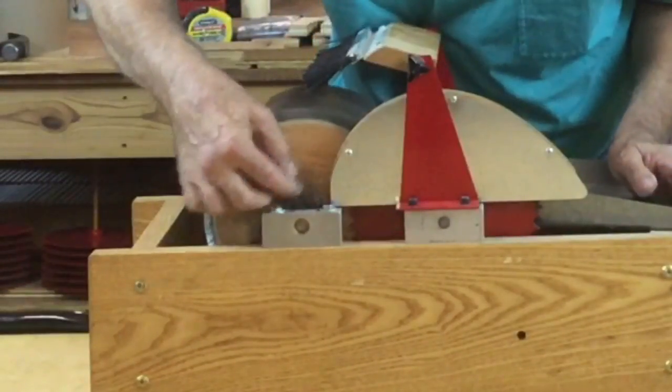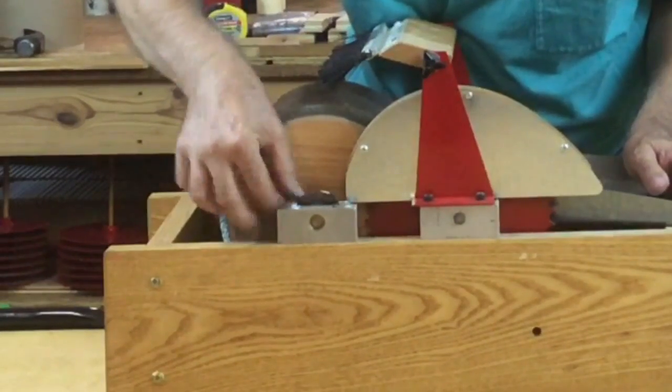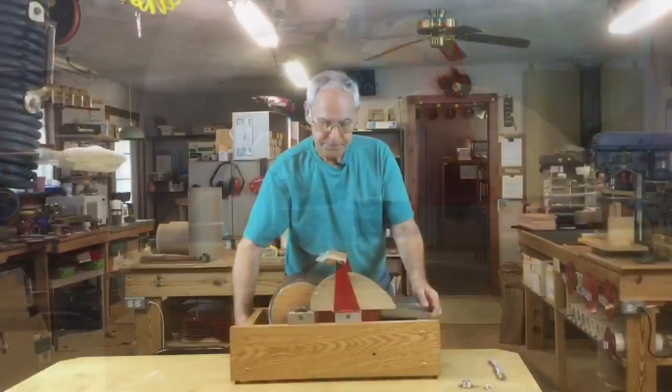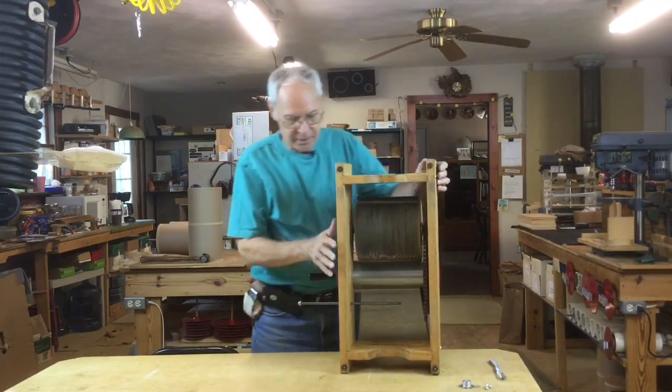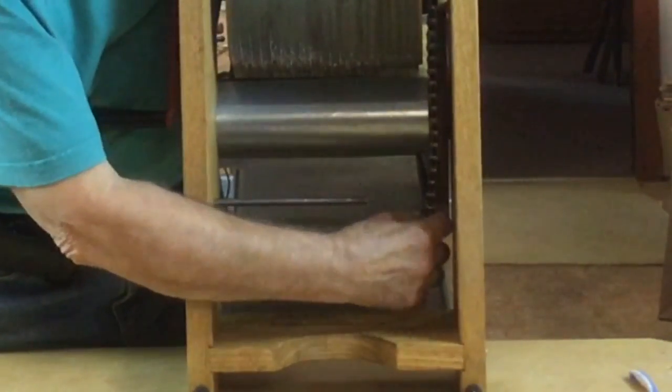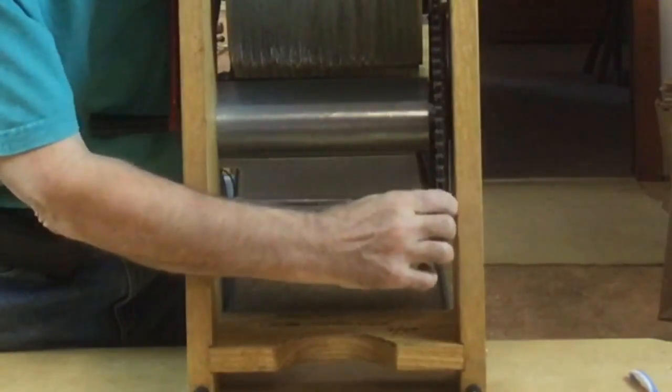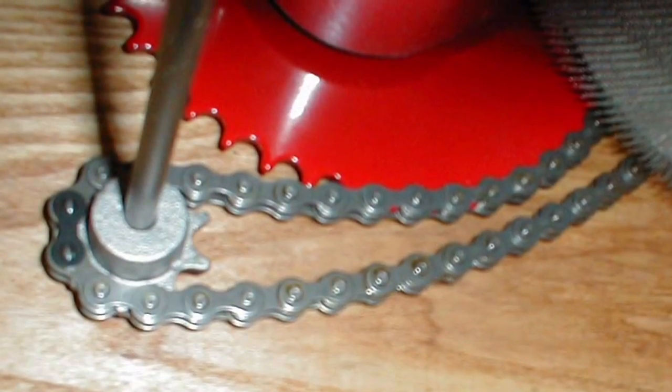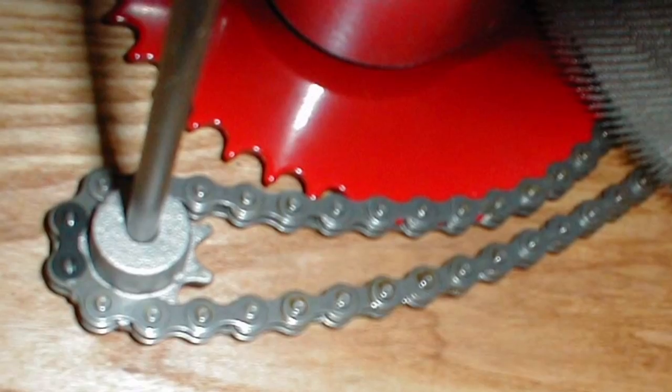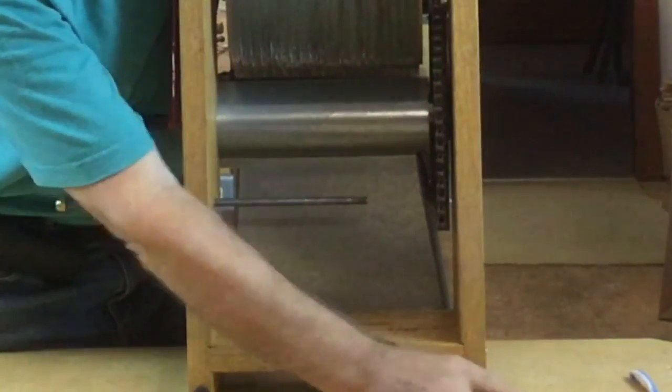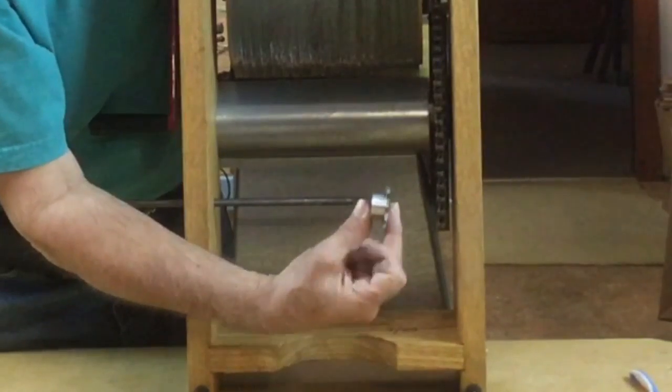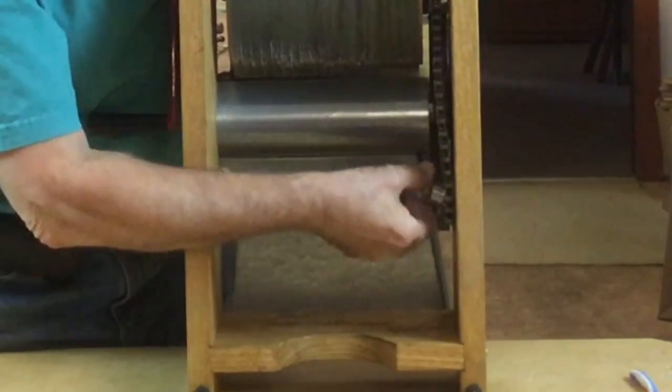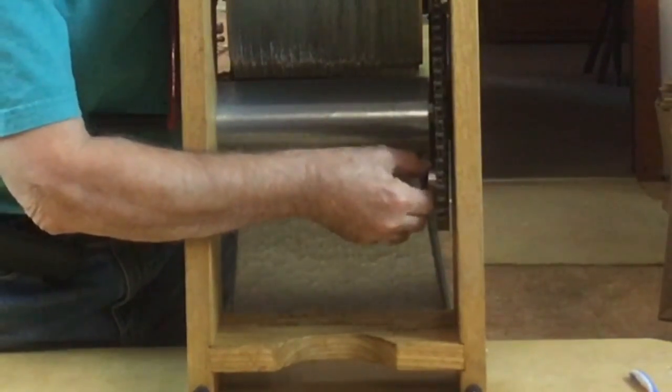Put the chain back on. Now, what you want to do is take the chain and put it on the large sprocket. Take your small one and make sure you put it in the right position. Put it back on the sprocket.